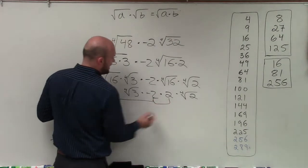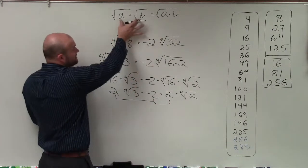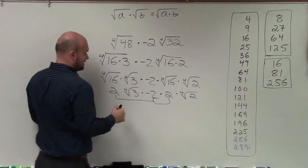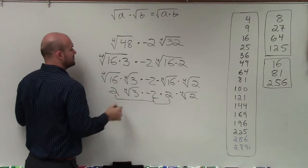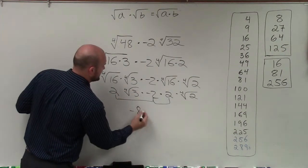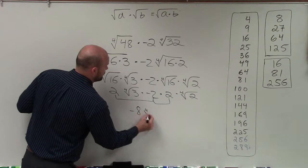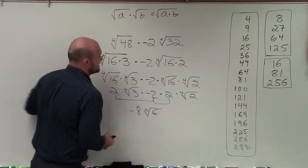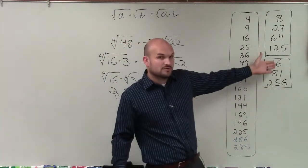Now, all of my numbers on the outside of my radicand, I can multiply, and then my numbers inside the radicand, I can multiply together. So therefore, I have 2 times 2 times negative 2 is going to be negative 8 times the fourth root of 3 times 2, which is 6, which I cannot take the fourth root of 6.